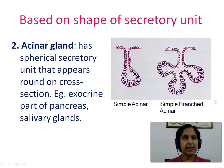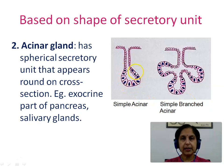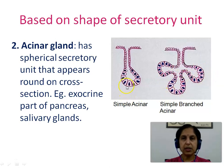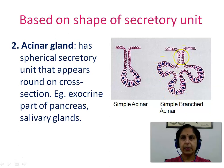The second type is the acinar gland, where the gland has a spherical secretory unit that appears round on cross section. Examples are the exocrine part of the pancreas and the salivary glands. As seen in the picture, the secretory unit is spherical and appears round on section. A simple acinar gland has a single duct, while a simple branched acinar gland has multiple secretory units but still a single duct.